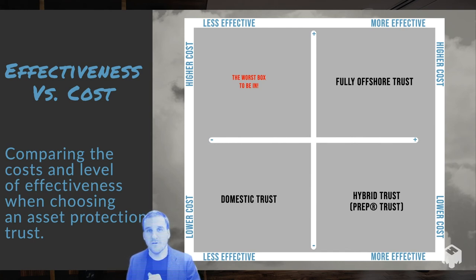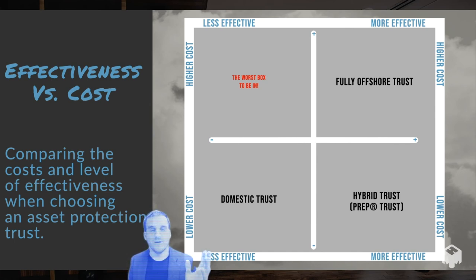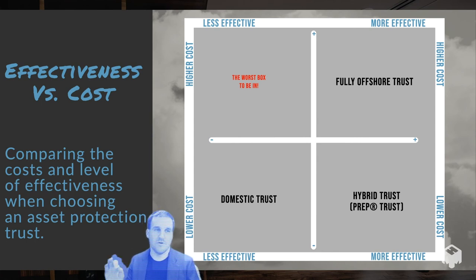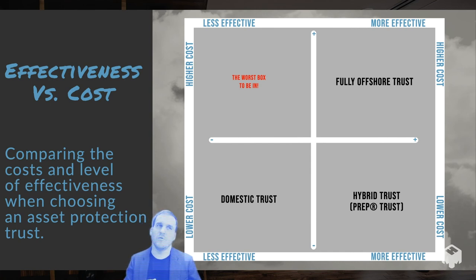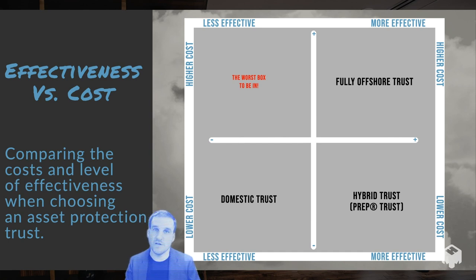Our goal here at Lay Roots is essentially: why pick one or the other? So we have our PREP trust — Personal Residence and Estate Preservation Trust — which is a hybrid of the two. You're going to take the best of these different boxes and combine them. The PREP trust is an offshore trust based on those better laws from an offshore jurisdiction and registered in an offshore location, so you get the strength of that offshore trust.